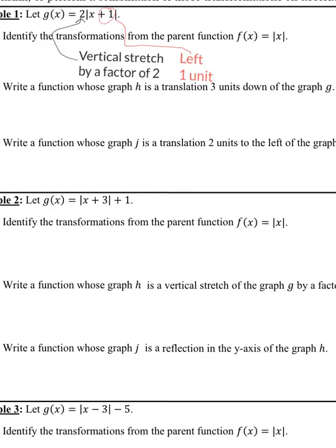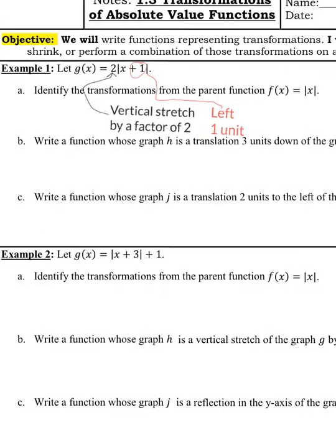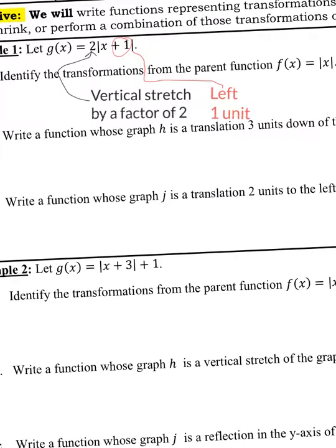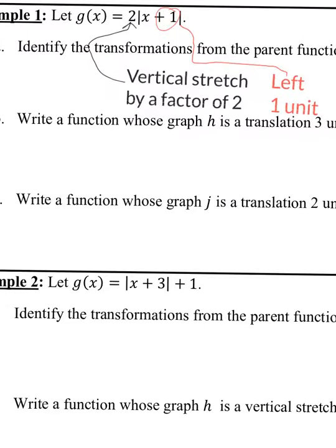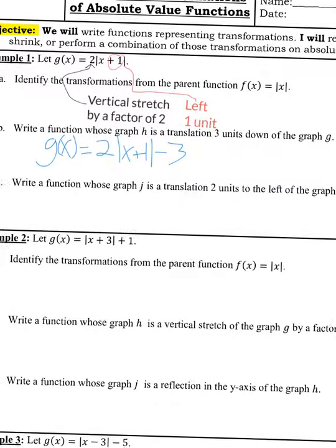For the next problem, we're going to write a function whose graph H is a translation three units down from graph G. If we're going to make it go three units down, you just subtract three on the outside. So H of x equals 2 times the absolute value of x plus 1, minus 3. That makes it go three units down.